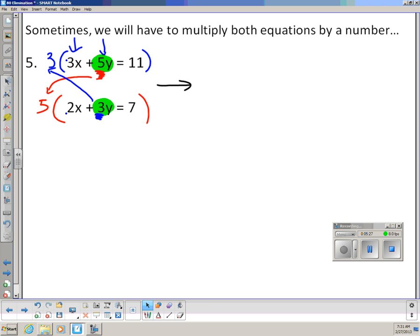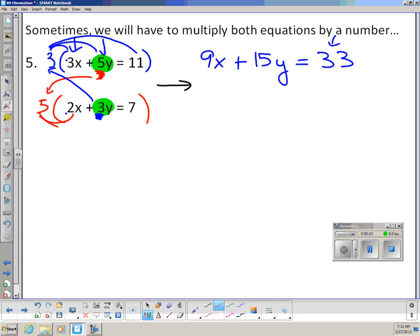So here's what we're going to get. On the top, I'm going to distribute the 3 to the entire equation, and I'm going to get 9x plus 15y equals 33. Notice I had to multiply 11 by 3. Then I'm going to do it on the bottom, but I'm going to multiply by 5 this time. So I'm going to have my 5 times 2x is 10x plus 5 times 3y is 15y equals 7 times 5 is 35. Now I haven't created opposites yet. However, I can do a little trick very easily to create opposites. These signs are both positive 15.